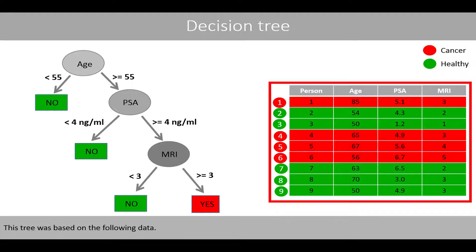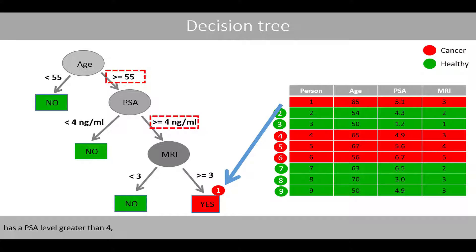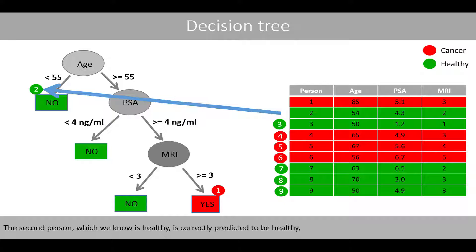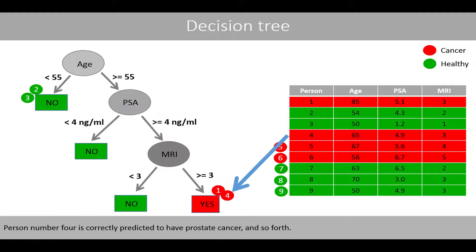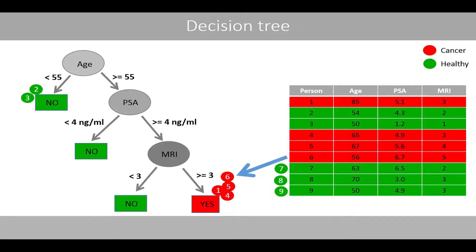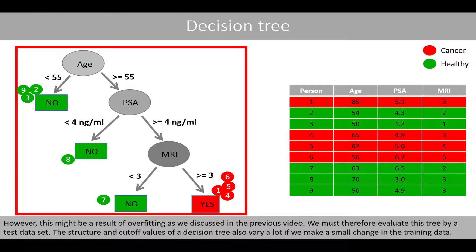This tree was based on the following data. The first person is correctly predicted to have prostate cancer because the person is older than 55, has a PSA level greater than 4, and an MRI score equal to or greater than 3. The second person, which we know is healthy, is correctly predicted to be healthy, which is also true for person number 3. Person number 4 is correctly predicted to have prostate cancer and so forth. We see that the decision tree makes a perfect prediction because all healthy individuals are predicted to be healthy and all patients with prostate cancer are correctly predicted to have prostate cancer.